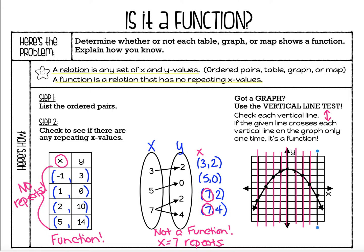If I keep doing this all the way through my entire graph, I can see that on every vertical line there is only one point. This passes the vertical line test. If I were to write ordered pairs for every single point — negative 4, negative 2; negative 3, positive one-half; negative 2, positive 2; negative 1, positive 2.75; 0, 3; 1, positive 2.5; 2, 2; 3, 1; 4, negative 1 — all of the x values are different. So this passes the vertical line test and is, in fact, a function. The reason is because there is only one point on every vertical line.